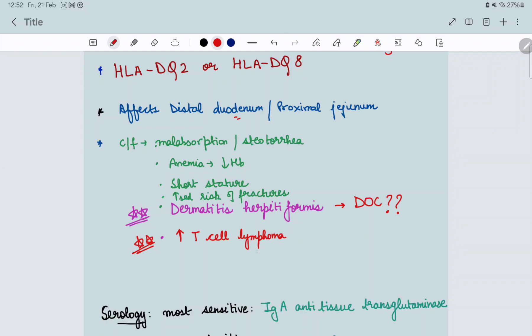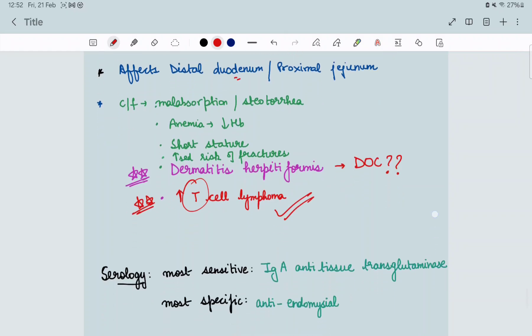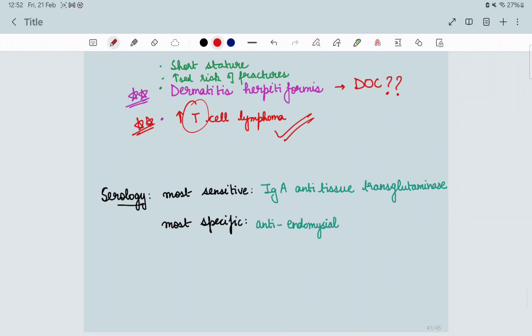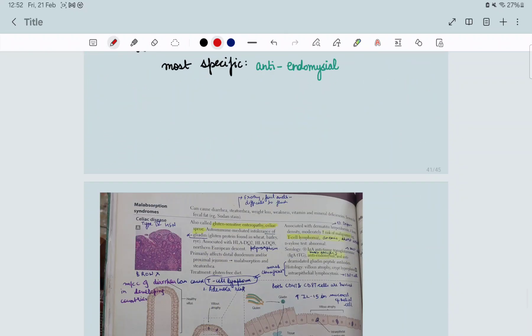It can also cause dermatitis herpetiformis. I want you to all comment what is the drug of choice for dermatitis herpetiformis, and this is a PYQ and comes very often in your exams. It causes increase in T-cell lymphoma as both CD8 and CD4 cells are involved. In serology, most sensitive is IgA anti-tissue transglutaminase.